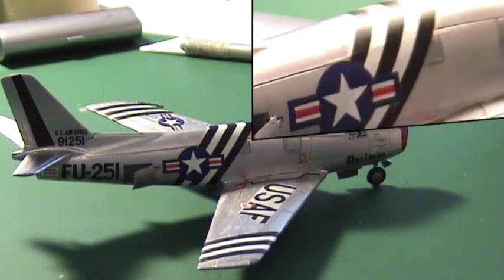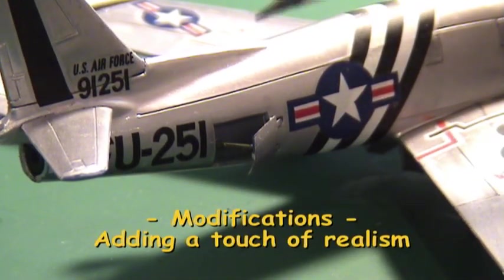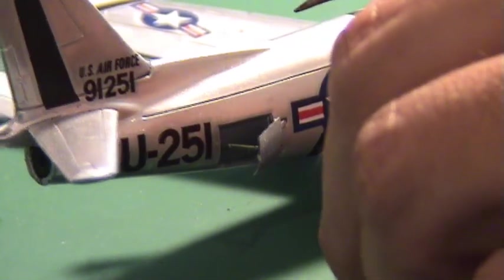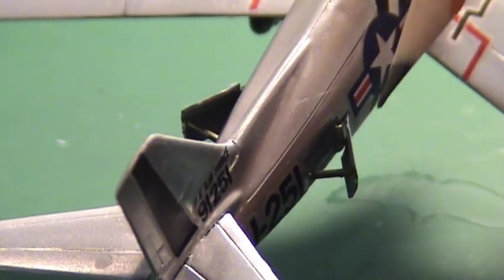Sometimes you want to add a special touch to your model, improve on a feature, or maybe you want your model to have insignias from a different country. In this example, we display the air brakes in an open configuration.